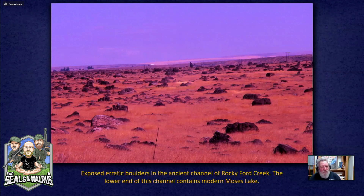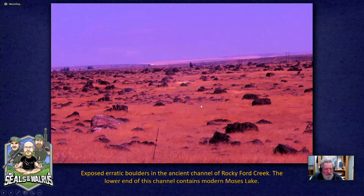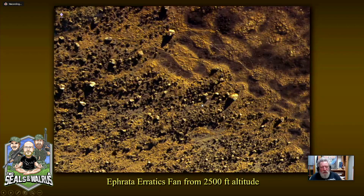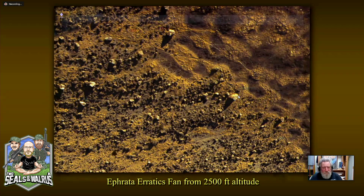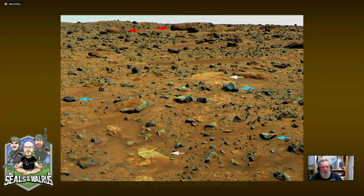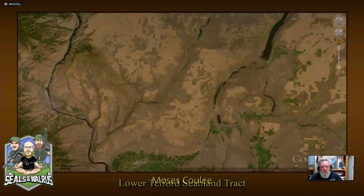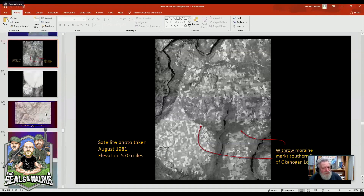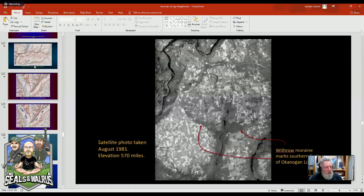Looking at the debris fan from about 2,500 feet up, these large boulders here are basically the size of houses. That's Grand Coulee. Now here is Upper and Lower Moses Coulee — look at the texture of the bedrock here. I've got pictures of Martian landscapes that look almost exactly the same, because there were gigantic floods on Mars as well.